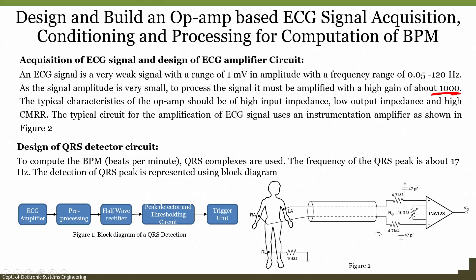For QRS detection, we have the ECG amplifier followed by pre-processing, then a half-wave rectifier, peak detector and finally the trigger unit. These are the steps in QRS detection. To compute beats per minute, QRS complexes are used. The frequency of QRS is about 17 hertz. The detection of QRS is represented using that block diagram we have just discussed.